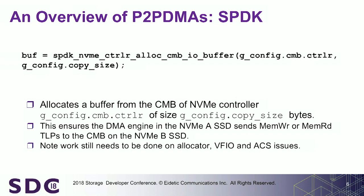This API allows us to take a certain amount of memory from a controller memory buffer, allocate it, essentially pin it so nobody else gets it, and allow that application to use it for DMA. What basically happens is a mapping occurs: as you construct the NVMe command, the PRP or SGL in the command now points to the controller memory buffer rather than host memory. As far as the NVMe drive is concerned, it has no idea it's doing a peer-to-peer DMA — its DMA engine is just told to issue memory read or write TLPs against an address.